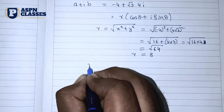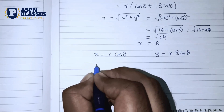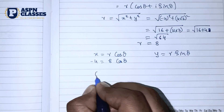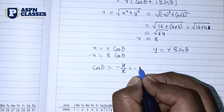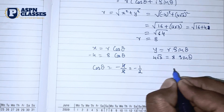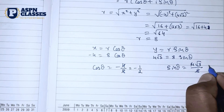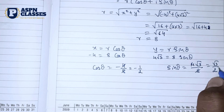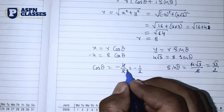Now using x equals r cos theta and y equals r sin theta: x is minus 4 and r is 8, so cos theta equals minus 4 by 8 which is minus 1 by 2. The y value is 4 root 3 and r is 8, so sin theta equals 4 root 3 divided by 8, which is root 3 by 2. We know sin 60° equals root 3 by 2 and cos 60° equals 1 by 2.